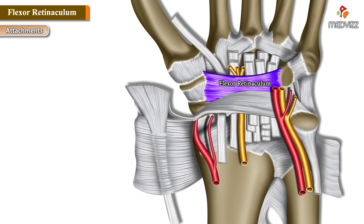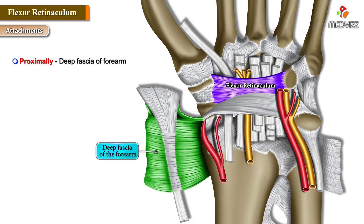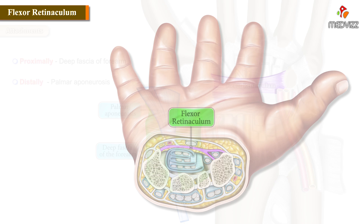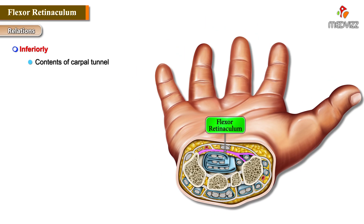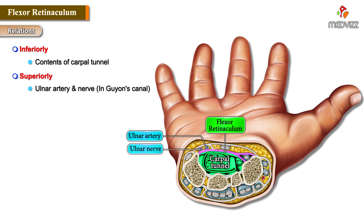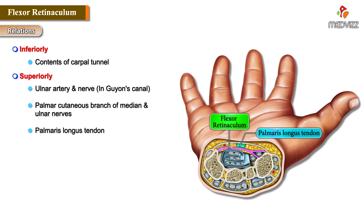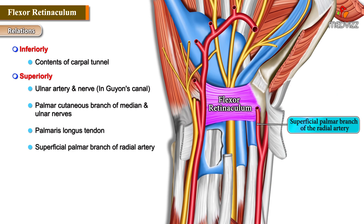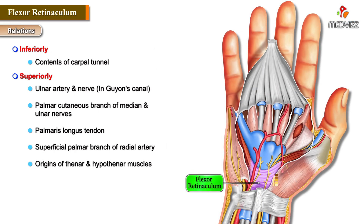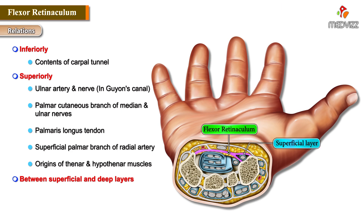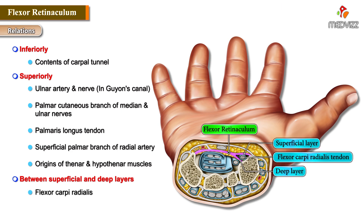Attachments: proximally to the deep fascia of the forearm, distally to the palmar aponeurosis. Relations: inferiorly the contents of the carpal tunnel; superiorly the ulnar artery and nerve in Guyon's canal, the palmar cutaneous branches of the median and ulnar nerves, the palmaris longus tendon, and the superficial palmar branch of the radial artery. The origins of the thenar and hypothenar muscles lie between the superficial and deep layers, along with the flexor carpi radialis.